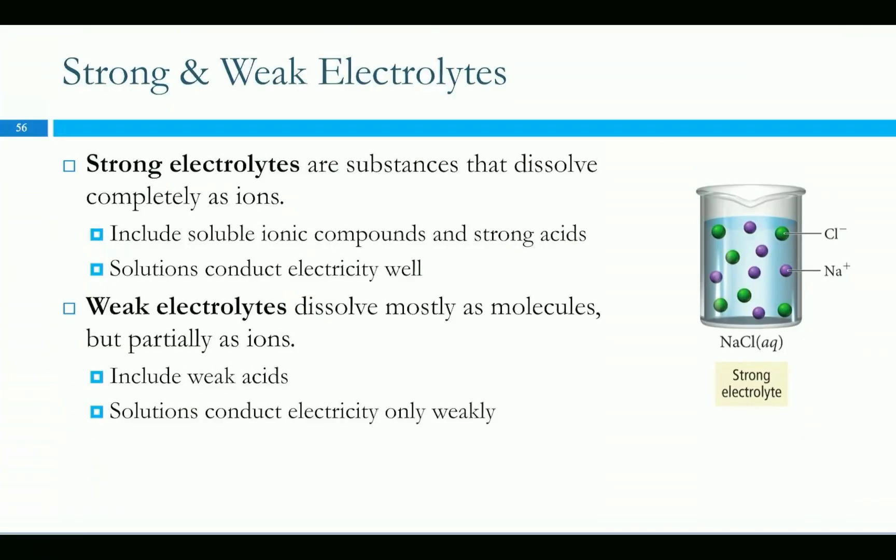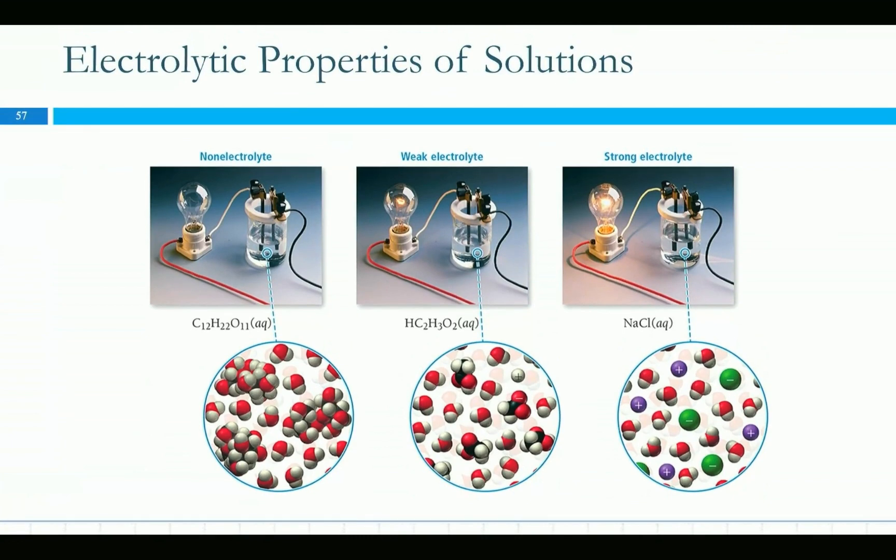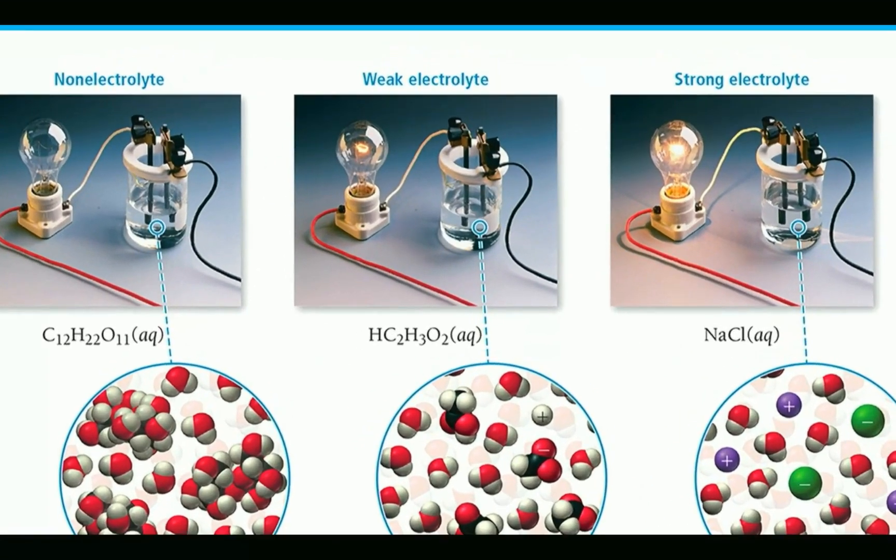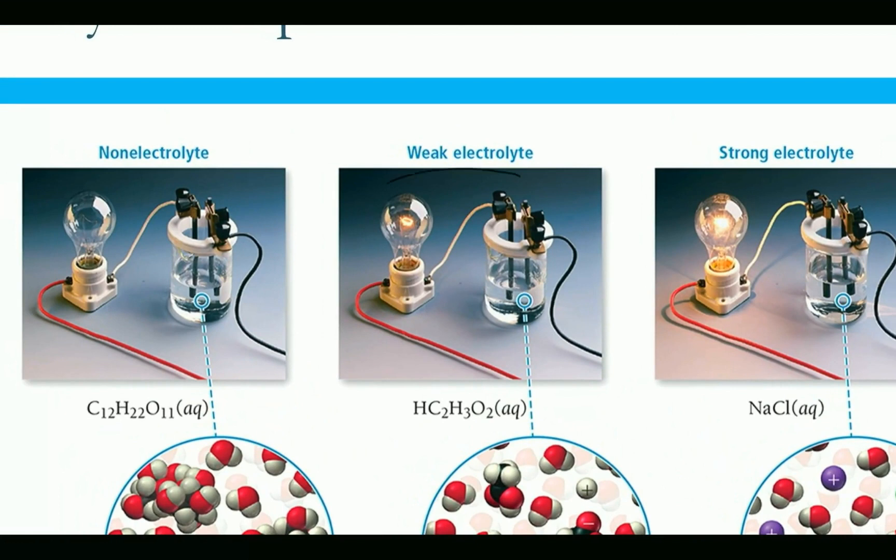Strong electrolytes dissolve completely, so any of our soluble ionic compounds are going to be strong electrolytes, and then strong acids. They conduct electricity. Weak electrolytes only ionize partially, and really that's only going to be weak acids. You can do these experiments where you try to pass current through a solution. If it passes current, then it's an electrolyte. If it doesn't pass current, light bulb doesn't light up, not an electrolyte. Acetic acid, and this is an acetic acid solution so it's aqueous, it does conduct electricity just a little bit. So you get a dim light from that.